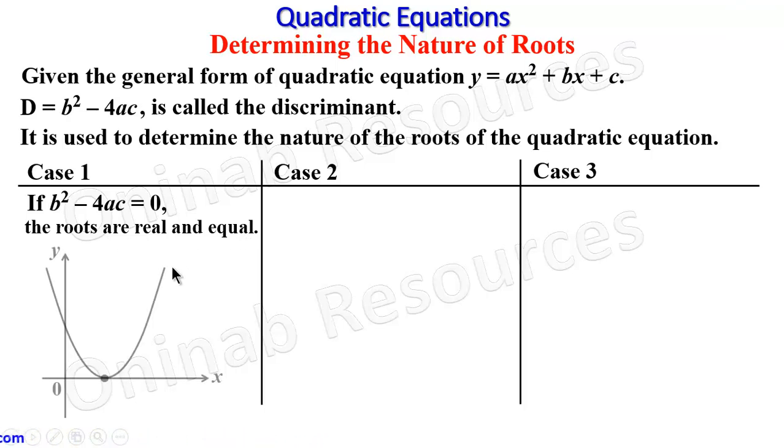So the graph looks like this. This graph is for a > 0. From the graph, the real and equal roots is found at this point on the x-axis.